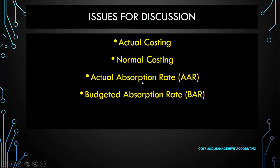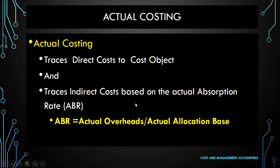In the process we will understand the actual absorption rate and the budgeted absorption rate. In actual costing, direct costs are traced to the cost objects and indirect costs are also traced on the basis of the actual absorption rate. So the total product cost is direct cost plus manufacturing overheads traced using the actual absorption rate, where actual absorption rate equals actual overheads divided by actual allocation base.